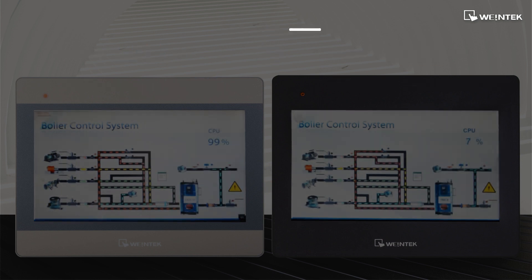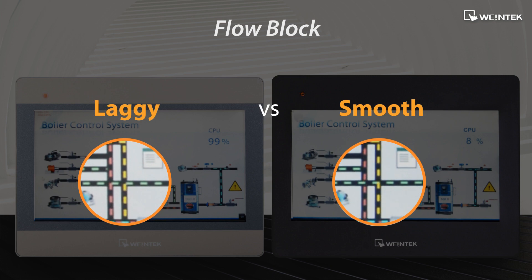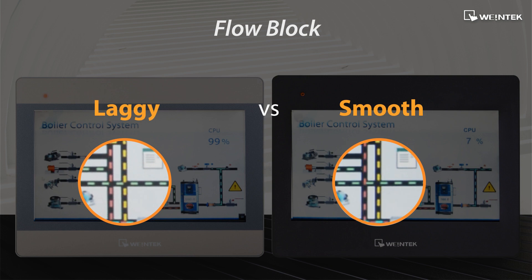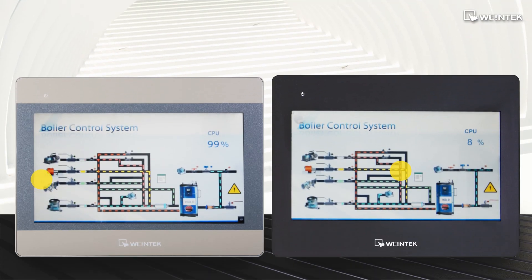Notice that the CPU power for IE basically maxes out, but only a fraction is needed for the CMTX. If you look at the screen closely, the flow blocks are choppy and lagging for IE, but the ones for CMTX on the right actually look like they are flowing.